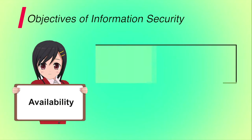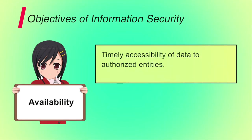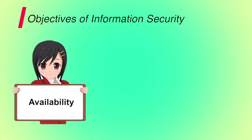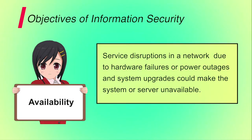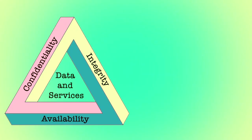Third is availability. It is ensuring timely and reliable access to and use of information. A loss of availability is the disruption of access to or use of information. For example, if you are trying to access any website but an attacker has already sent multiple requests to the server, the server will not be able to process your request — that means the data is not available to the authorized user. Service disruptions due to hardware failure, software failure, power outages or system upgrades could also make the system unavailable. Security must ensure data is available to the authorized user whenever required.